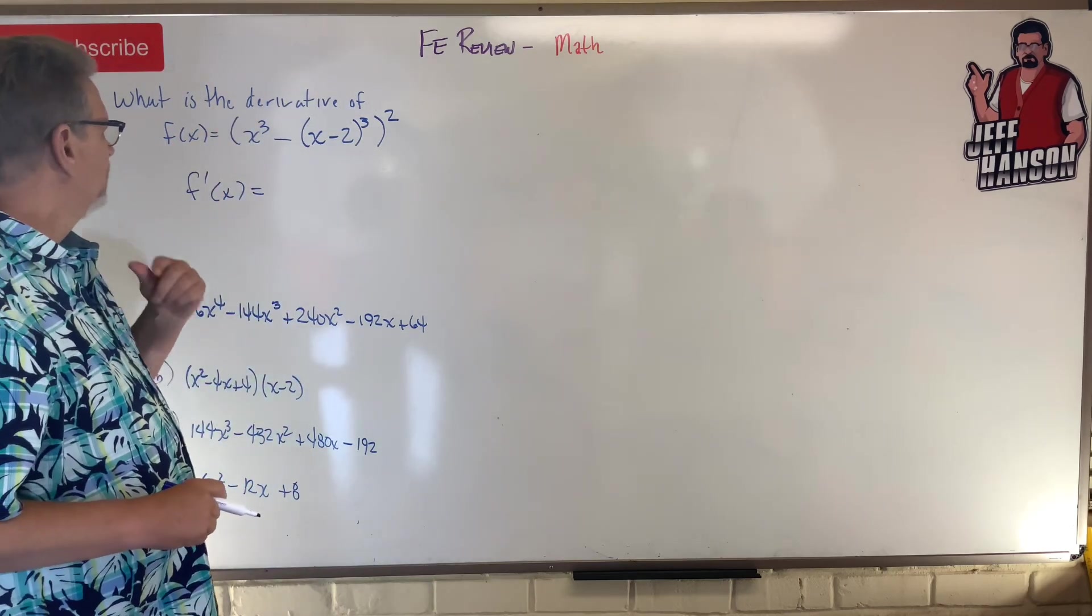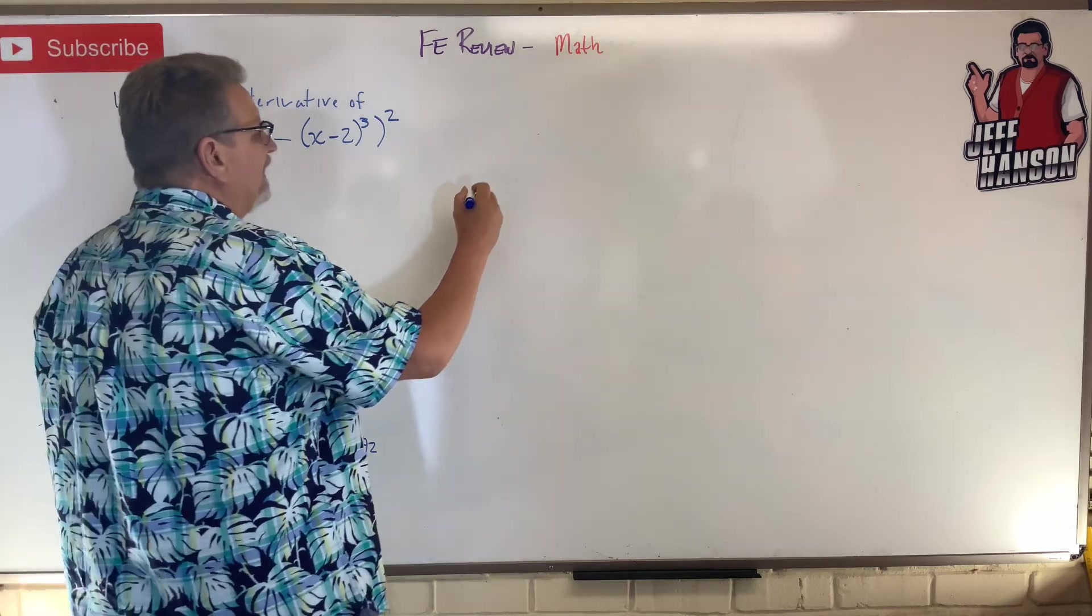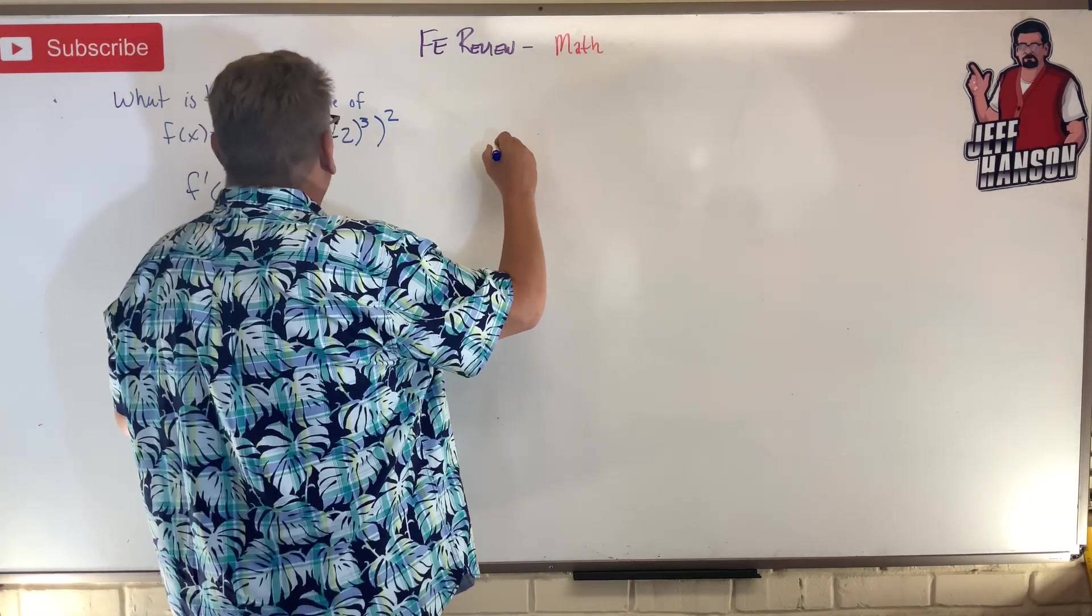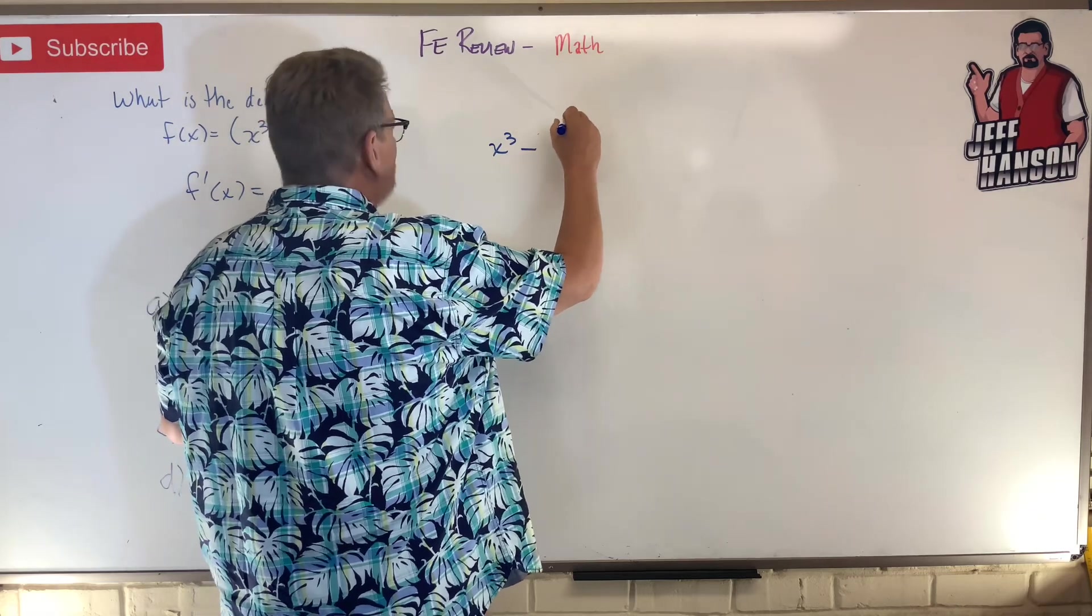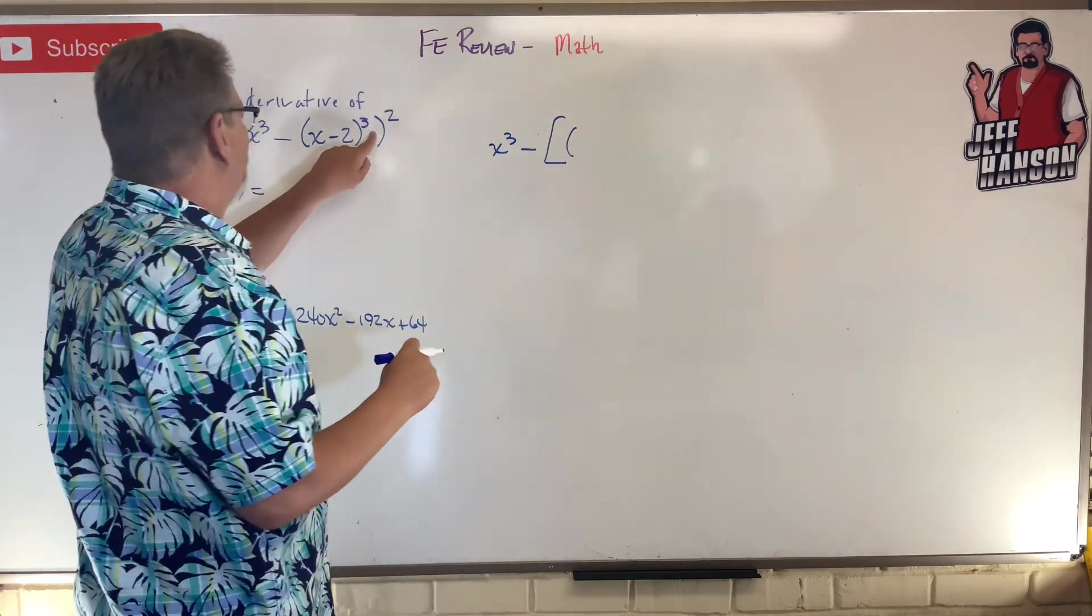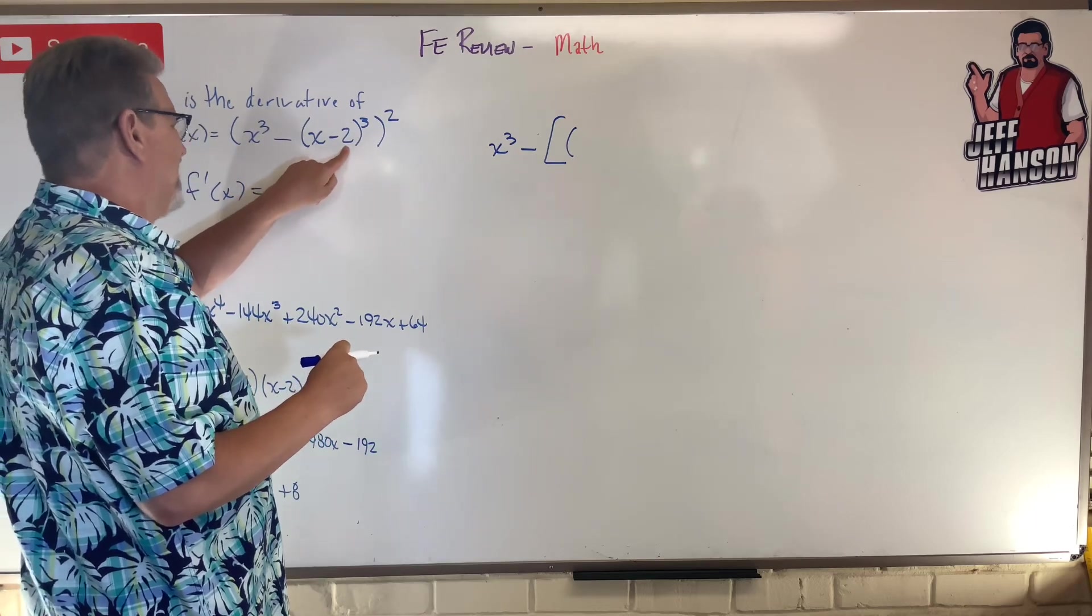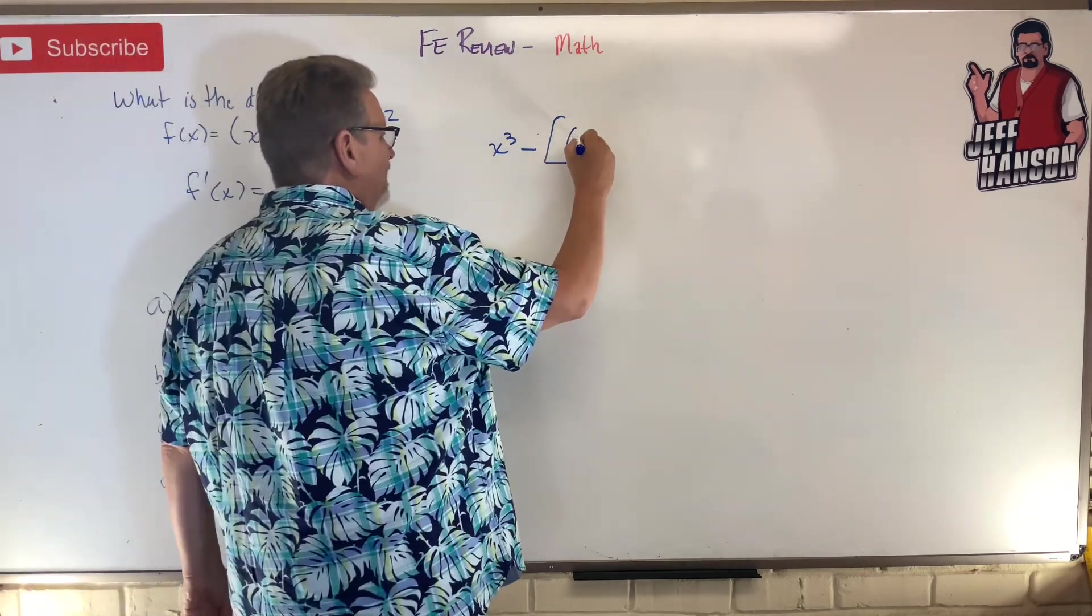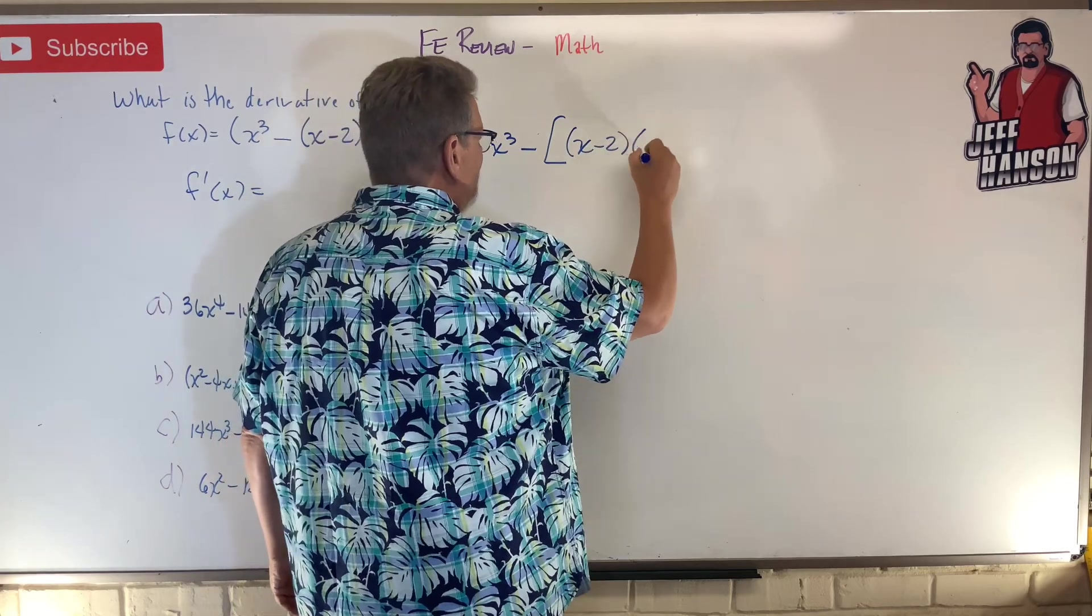Let's expand that thing first. It's x³ minus, and I'm going to just put a bracket here, this is x minus two. Now Johnny Winks also would say oh that's x³ minus eight. That is not what that is. That is (x-2) times (x-2) times (x-2).